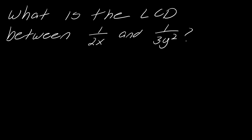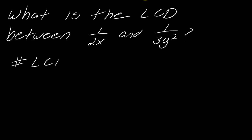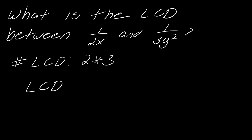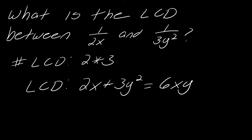Building on from the earlier video: what is the LCD between 1 over 2x and 1 over 3y²? To find an LCD with rational expressions you do the same thing as with regular fractions. The number part of the LCD is still 2 times 3. This denominator has an x and this one has a y squared — they share no common factors — so the LCD is found by multiplying the two denominators together to get 6xy².